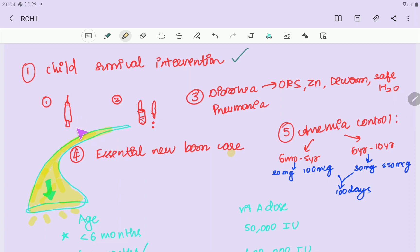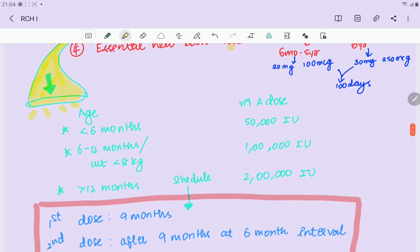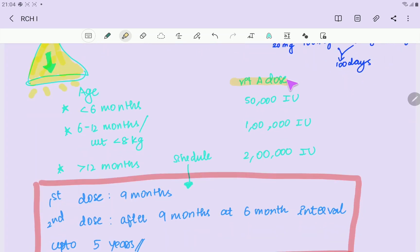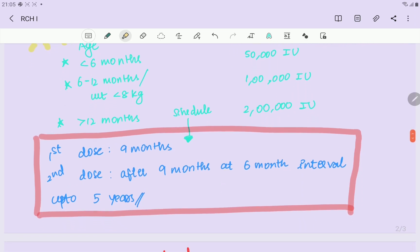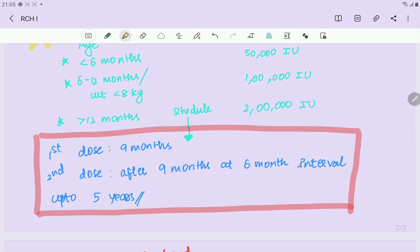Now I'll show you a point to expand on immunization. Vitamin A prophylaxis - that's the schedule. Vitamin A dose: less than 6 months is 50,000 international units, 6 to 12 months with weight less than 8 kg is 1 lakh international units, more than 12 months is 2 lakh international units. The first dose is at 9 months, second dose after 9 months at 6 month intervals. Up to 5 years at 6 month interval you get this dose.